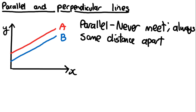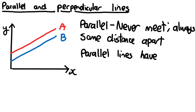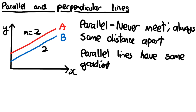The key thing for this chapter that you need to know is that parallel lines have the same gradient. So if line A has a gradient of two, then line B will also have a gradient of two. They have the exact same gradient. The only difference between the two lines is their y-intercept.